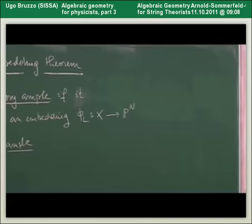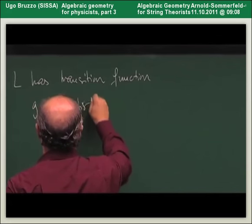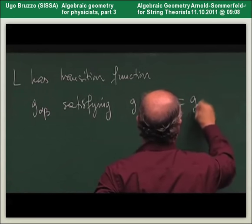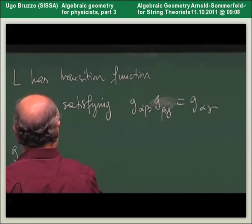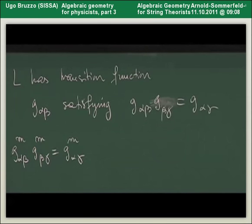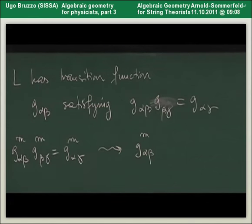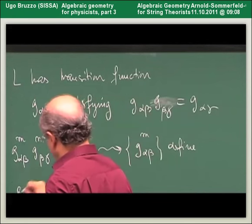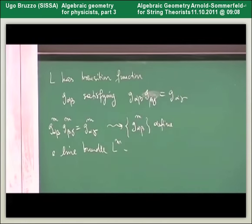In respect to some given trivialization, L has transition functions g_{alpha beta}, and we know these satisfy a cocycle condition on triple intersections. We can take the m-th power of this equation, and it will still be true. Therefore these powers — which are still maps from U_alpha ∩ U_beta to C* — will define a line bundle, which is the m-th power. This m can be any integer number.